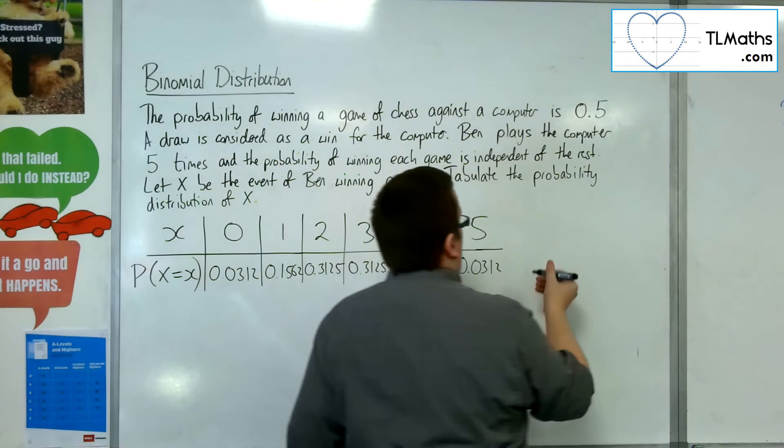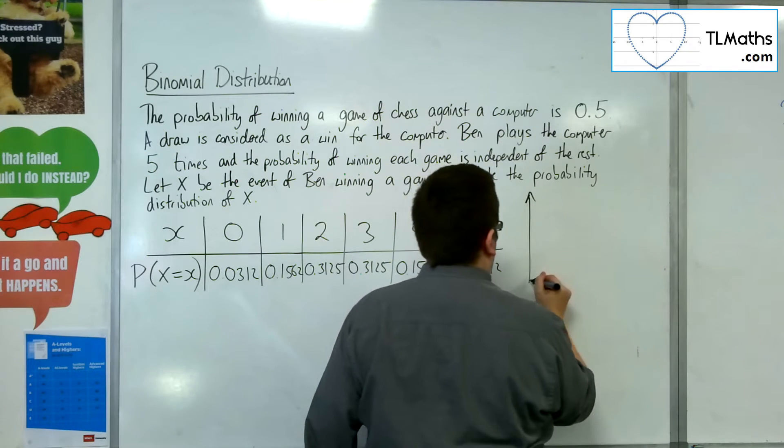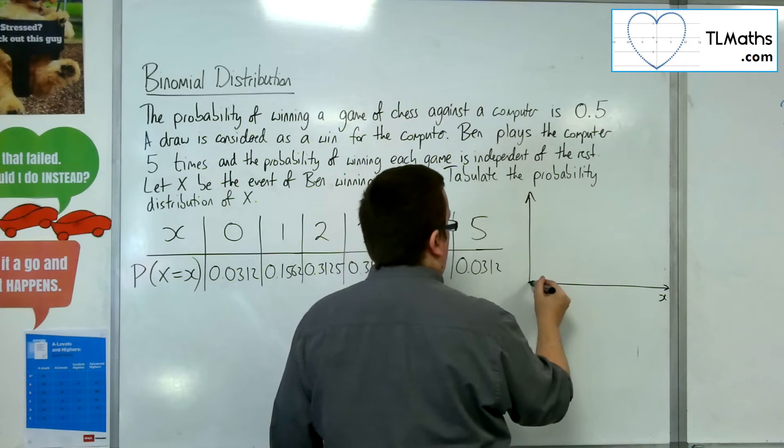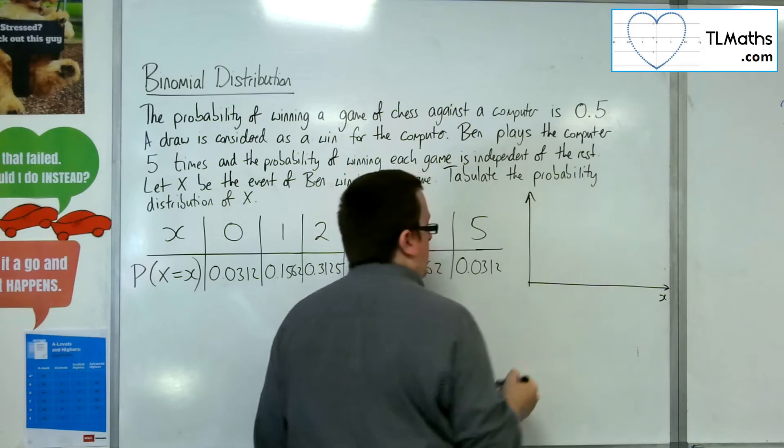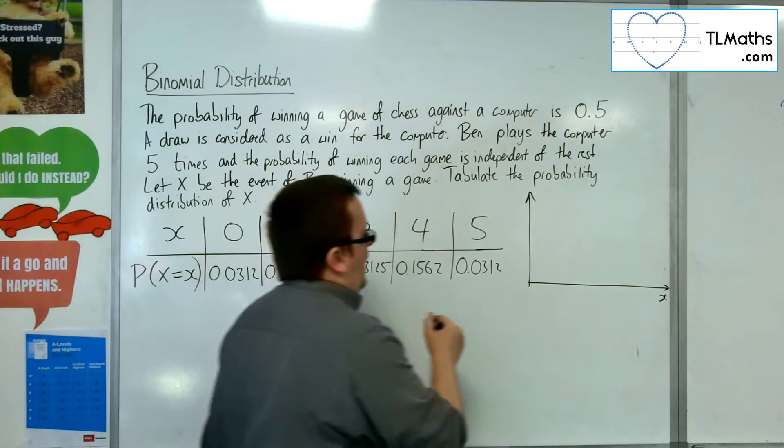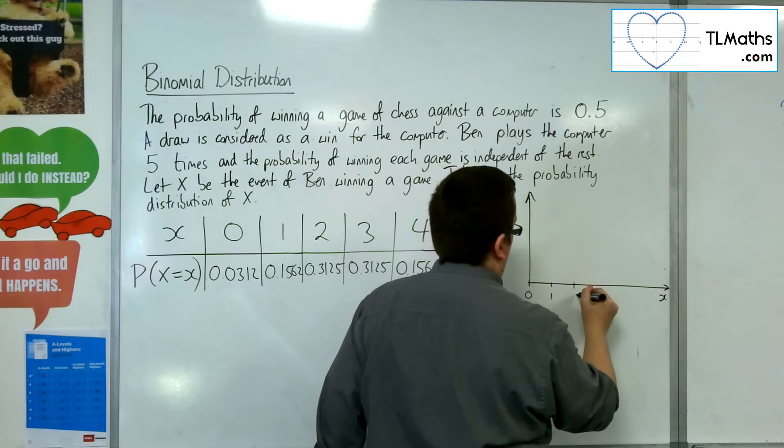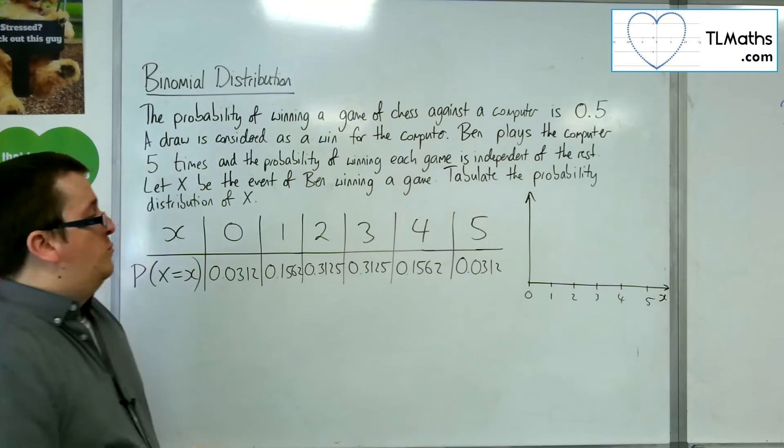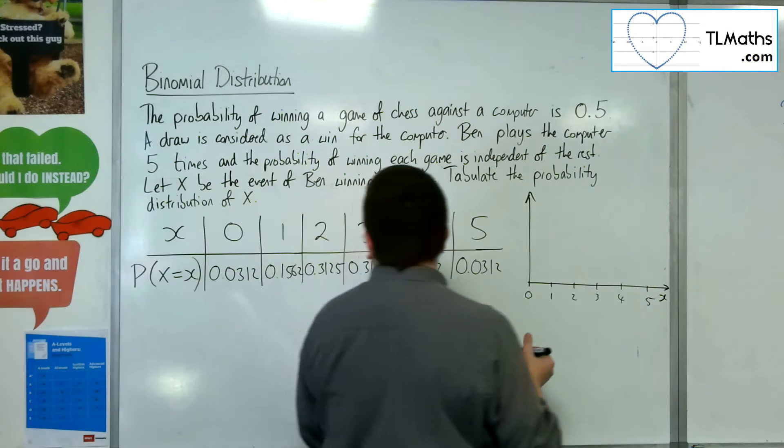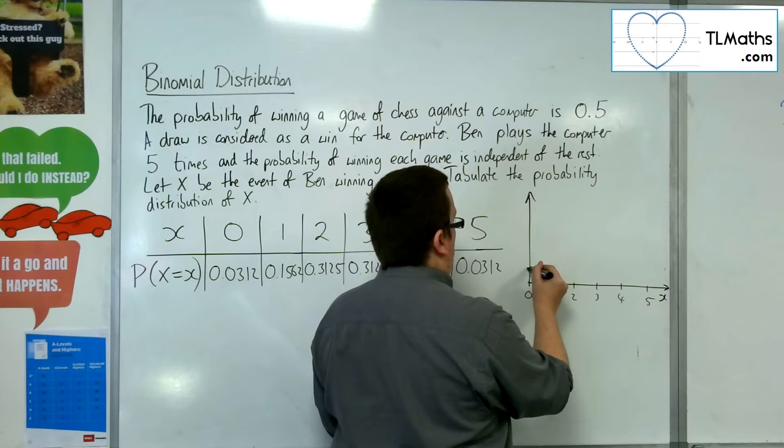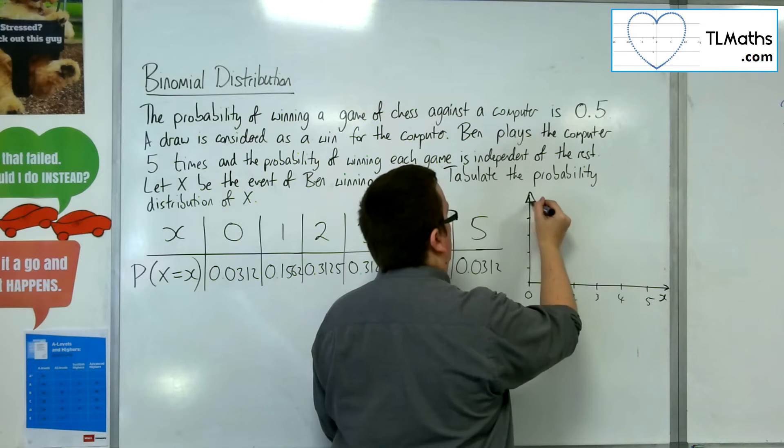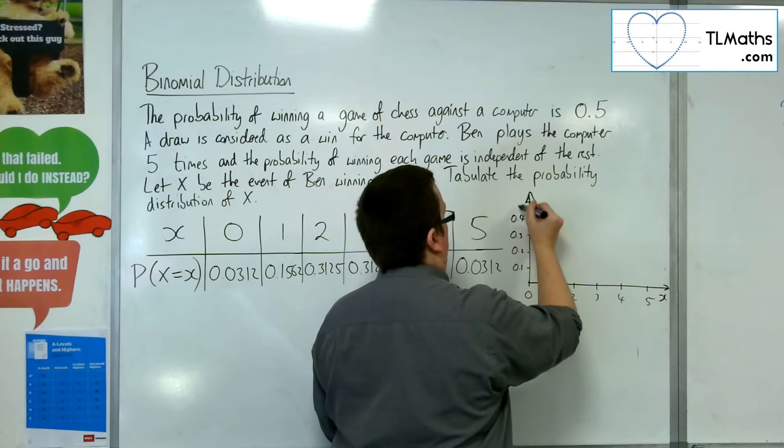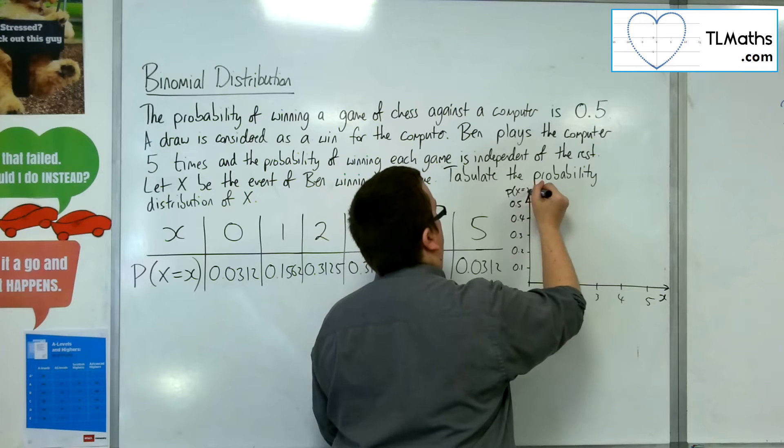Now if you were to graph this with your possible x values along the bottom, so you've got 0, 1, 2, 3, 4, 5, and your probability is going up the side. So we already want to go up to just about 0.3: 0.1, 0.2, 0.3, 0.4, 0.5. I'll go there: 1, 2, 3, 4, 5. So these are the probabilities.